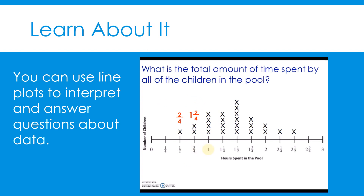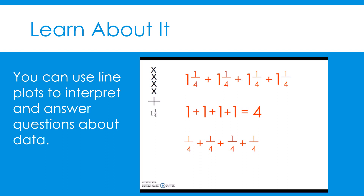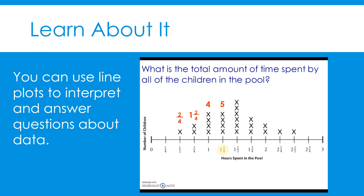Now let's go to the next column. All of the X's in this column represent one hour spent at the pool. There are four of them, so that column represents four hours. The next column is for one and one-fourth hours. The four X's represent one and one-fourth added four times. Let's add these four mixed numbers together. Adding the whole numbers: one plus one plus one plus one equals four. Adding the fractions: one-fourth plus one-fourth plus one-fourth plus one-fourth equals four-fourths, which is the same as one whole. Four plus one equals five. Let's add five to our line plot.